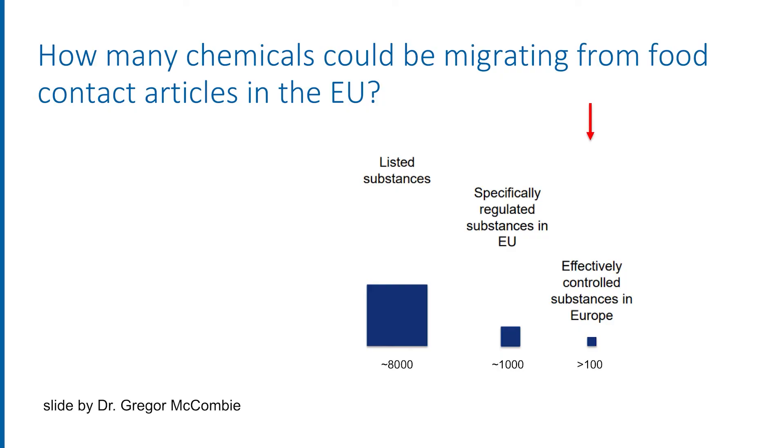The estimated number of chemicals actually enforced by member states across Europe in a systematic and regular way is around 100, and in some countries it will be well below that number. So compare these 8,000 or so chemicals intentionally used to make food packaging in Europe with the roughly 100 or fewer chemicals actually being controlled in finished products on the European market — there's quite a large gap here.